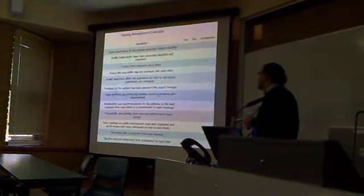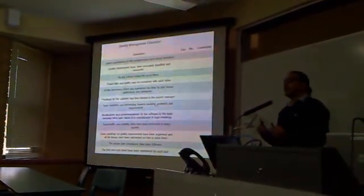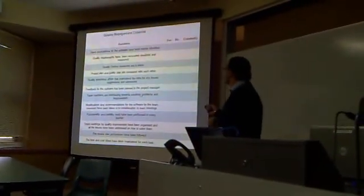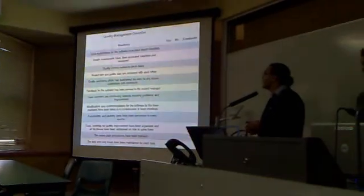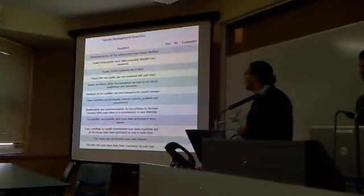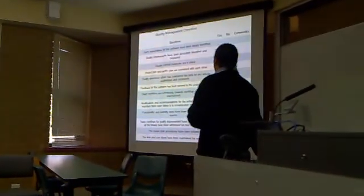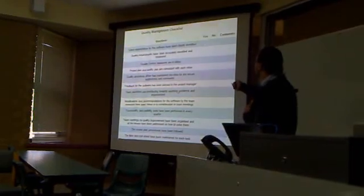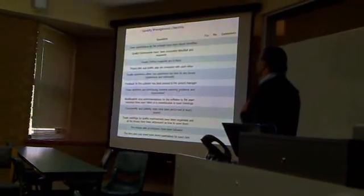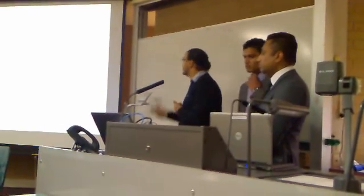Then we have the quality management checklist, which is basically given to the reviewer when you submit a project. The reviewer goes through your project and checks those conversations. This includes questions like user expectations for the software, quality requirements that have been accurately identified and measured, and whether feedback from the software has been passed to the project manager. If the reviewer agrees, they mark yes; if they don't agree, they mark no. If something is incomplete or needs improvement, they can add comments in the comments section — and that's the checklist.